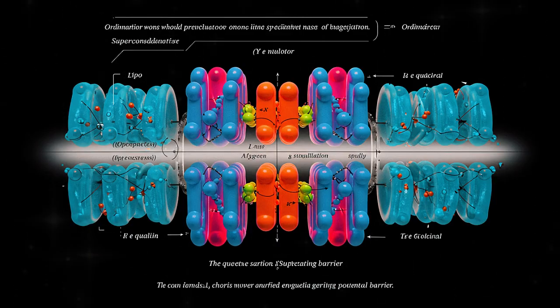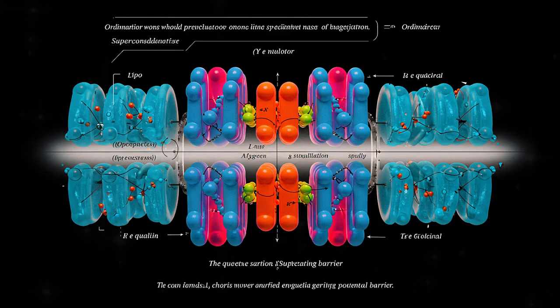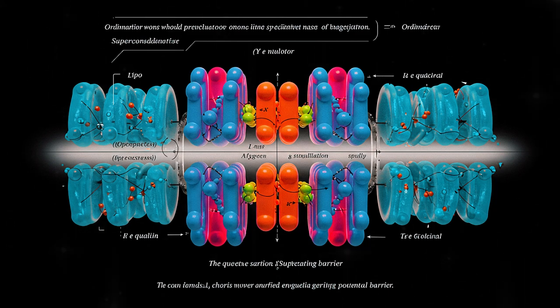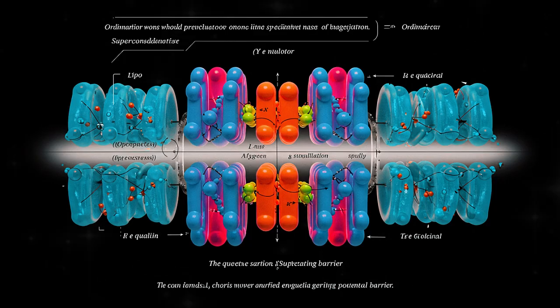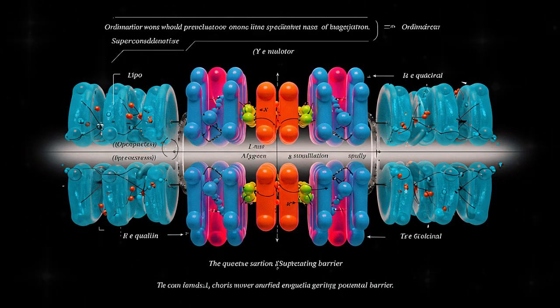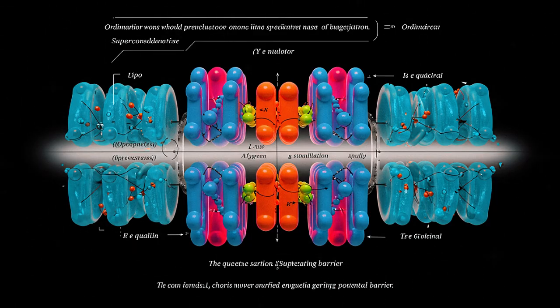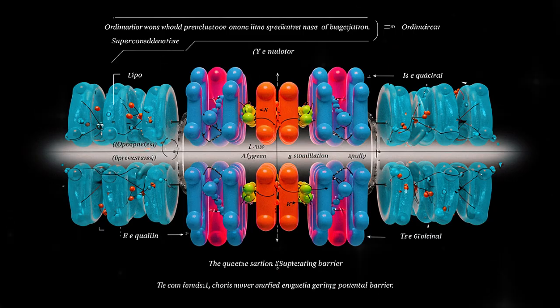So when researchers discuss electrons transitioning between energy levels, they're not describing particles leaping from one orbit to another. What actually transpires is that the electron's wave configuration changes shape. It restructures itself into a new stable configuration that perfectly corresponds to the atom's potential field.